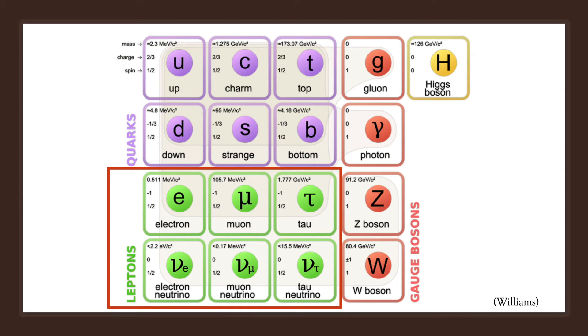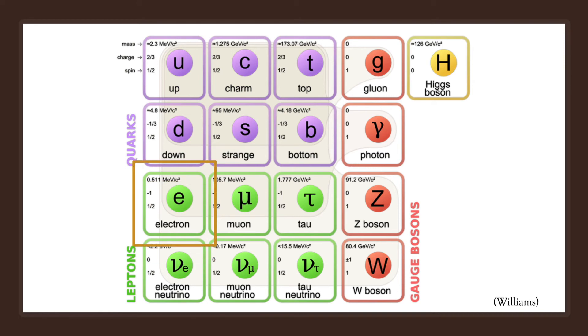Now, leptons are the six particles shown here in this diagram. Electrons are probably the most famous of the leptons, but they are only one type out of six. The other one we will look at is the electron neutrino.